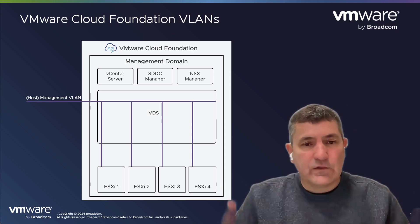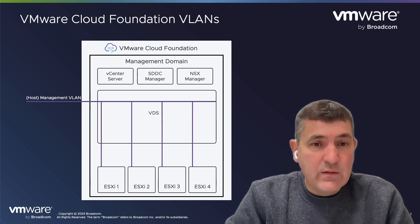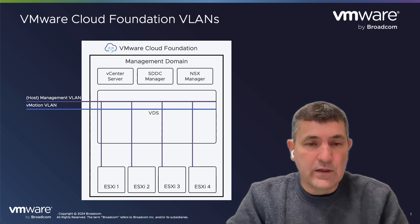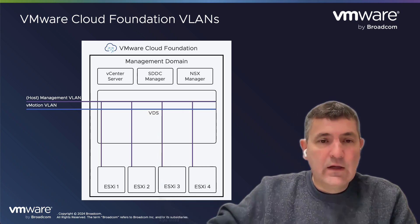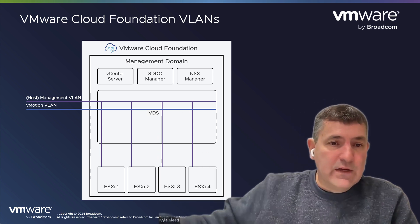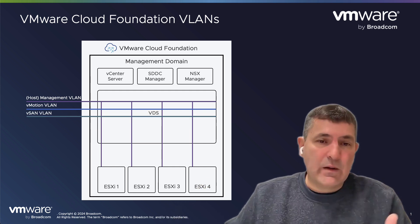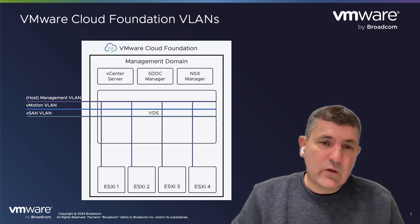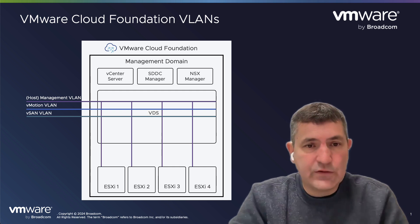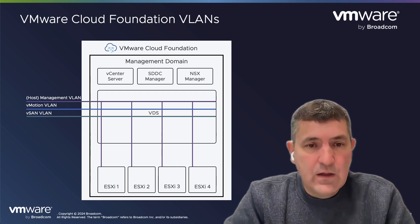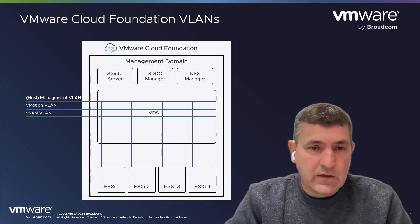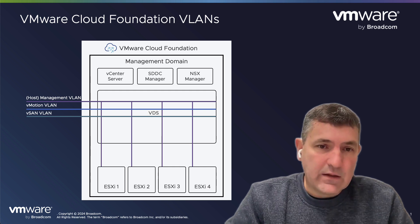When we set up vMotion, we need to set up a vMotion VM kernel interface, so we need another VLAN associated with that, and then another VLAN associated with vSAN. Remember, vSAN is required for the management domain, so you do need it for at least that first cluster. So we're at three right now — we've got the management VLAN, we've got the vMotion VLAN, and we've got the vSAN VLAN.